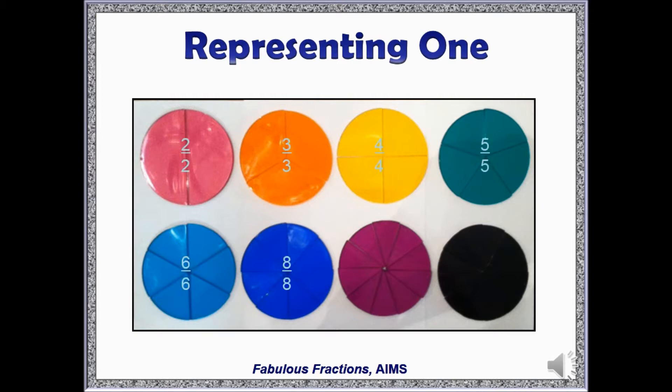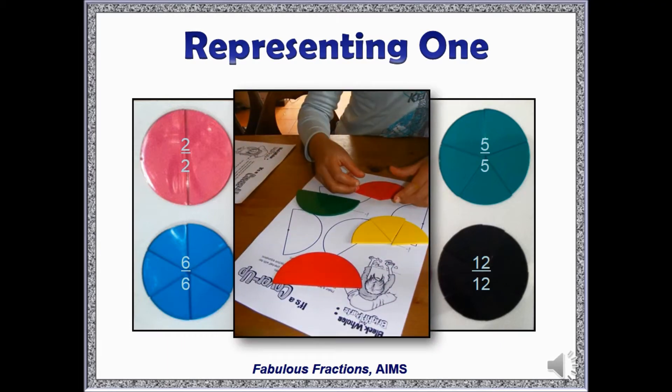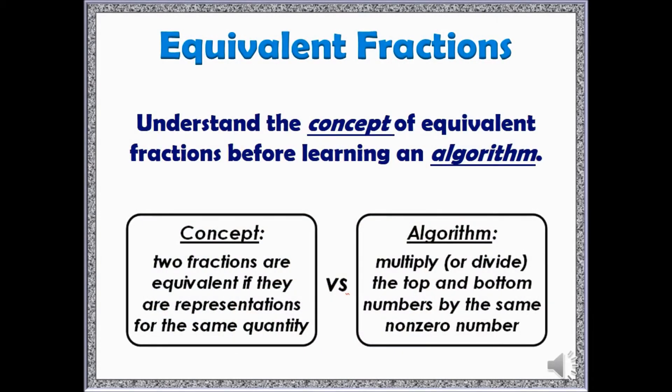This is a great activity because it can lead to the understanding that many different fractions can be used to represent the same amount. This activity also helps students see many ways to represent one whole. For example, two halves, three thirds, four fourths, in order to lay the foundation that multiplying by a form of one will create an equivalent fraction without changing the value. This activity can also be modified and repeated later in the unit when learning about equivalent fractions. Here you can see it was modified for students to find many different ways to build one half.